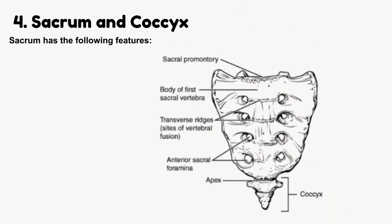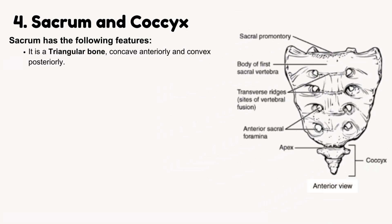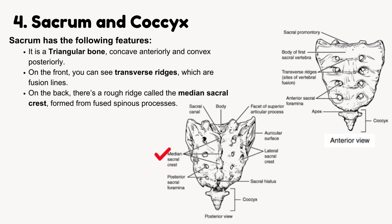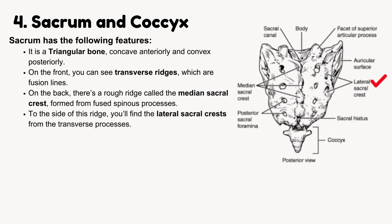The sacrum has the following features. The sacrum is a triangular bone, concave anteriorly and convex posteriorly. On the front, you can see transverse ridges, which are fusion lines. On the back, there's a rough ridge called the median sacral crest, formed from fused spinous processes. To the side of this ridge are the lateral sacral crests, from the transverse processes.